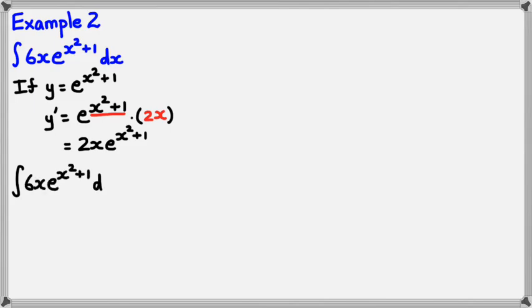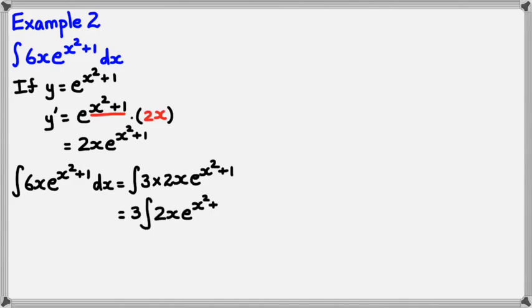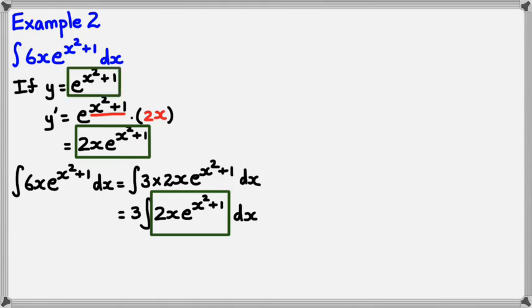Now comes the tricky part where we need to see what to factorize. We know that the integral of 6x times e to the power of (x squared plus 1) dx could be written as the integral of 3 times 2x times e to the power of (x squared plus 1), because 3 times 2 is just 6. I can take the 3 out of the integral, giving 3 times the integral of 2x times e to the power of (x squared plus 1) dx. Since 2x times e to the power of (x squared plus 1) is what you get when you differentiate e to the power of (x squared plus 1), the integral equals 3 multiplied by e to the power of (x squared plus 1), plus c.